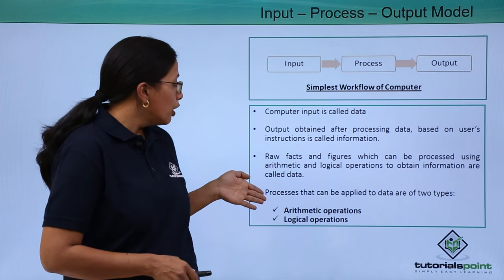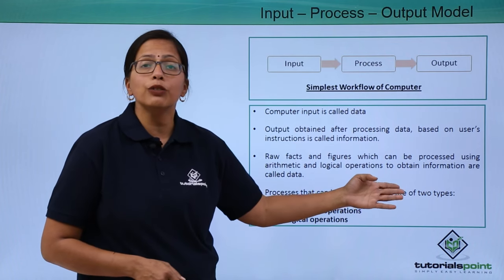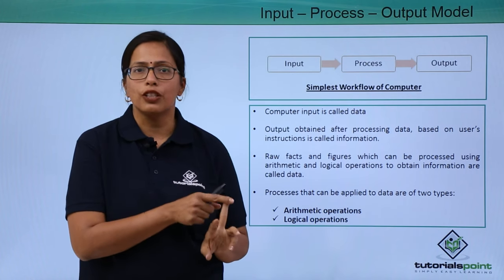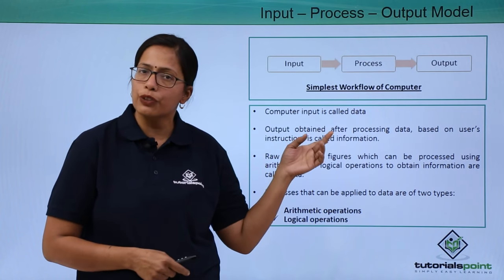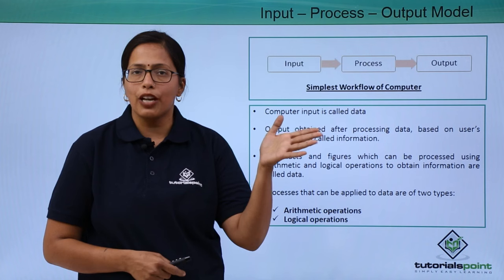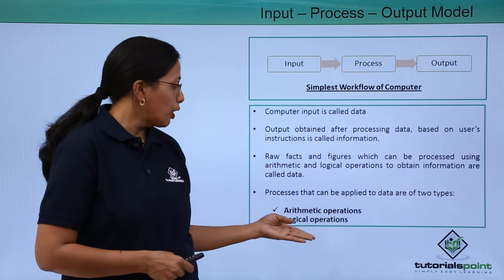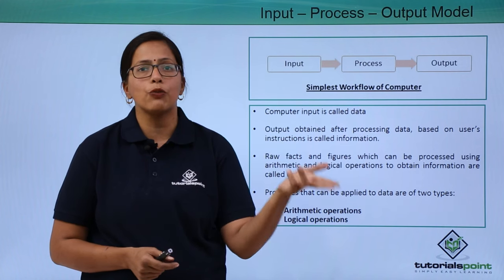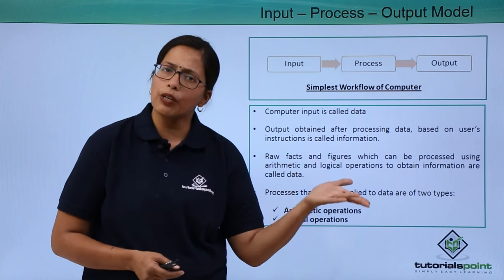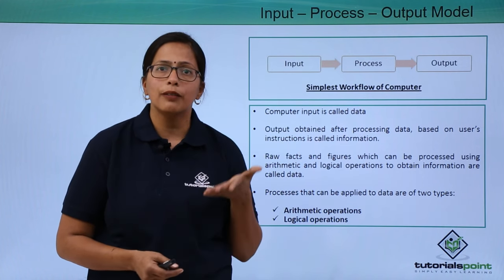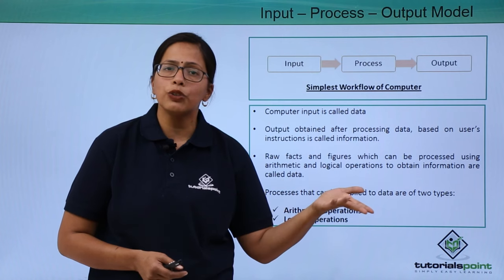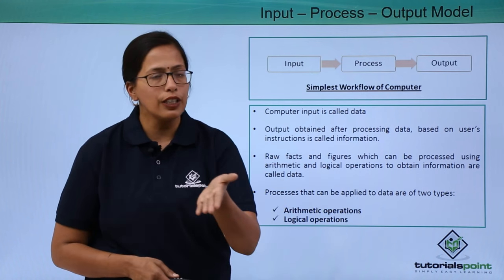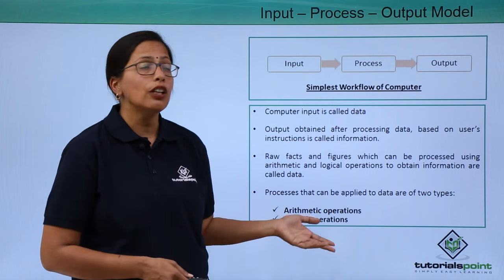So this brings us to the processes that can be applied to the data are of two types: arithmetic and logical. Arithmetic—an example I have given you just now—addition, subtraction, multiplication. What are logical operations? If I want to compare something, I give two numbers and I ask the computer to say which is greater. So I give the same two numbers two and three, but my instruction is: compare the two numbers and tell me which is greater. So it will tell me the answer as three. So that will be a logical operation.